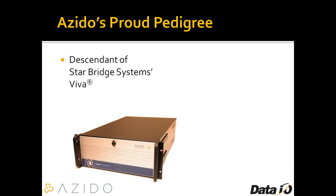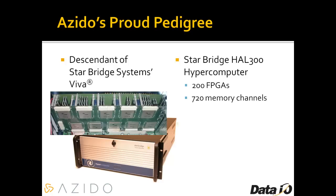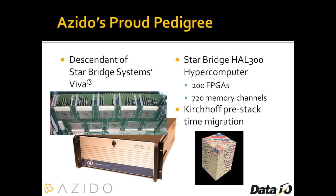Azito has been hardware-proven. It's a descendant of another programming language called Viva from Starbridge Systems, which used Viva with their hyper-computer products. For example, the HAL 300 was one of the largest they built, with over 200 FPGAs and over 700 memory channels. With Viva, they were able to map complex algorithms — one example used in seismology is the Kirchhoff Pre-Stack Time Migration, a very complex, compute-intensive parallel algorithm that can be effectively described in Viva and in Azito.